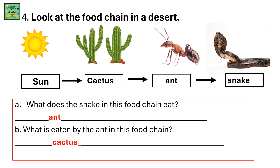Look at the food chain in a desert: sun, cactus, ant, and snake. What does the snake in this food chain eat? The snake eats the ant. What is eaten by the ant in this food chain? The ant eats the cactus.